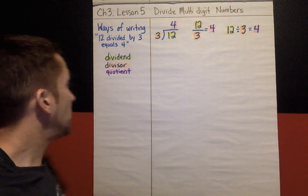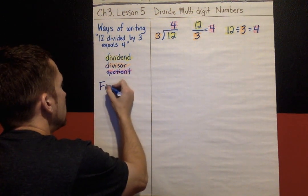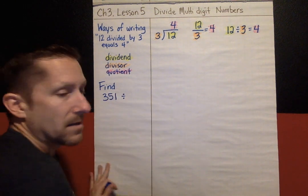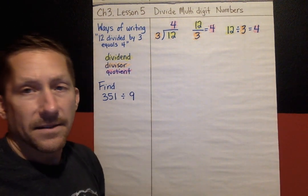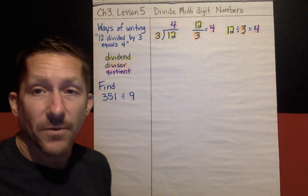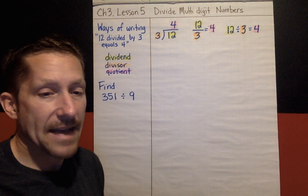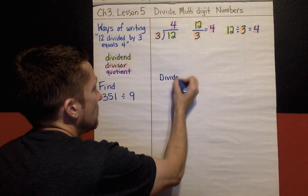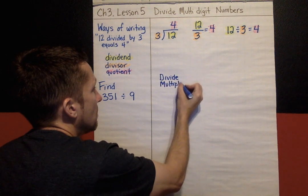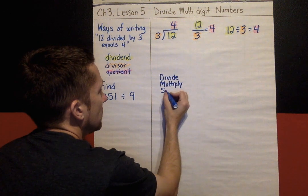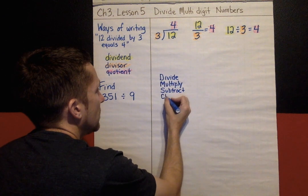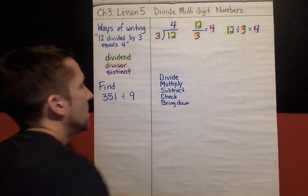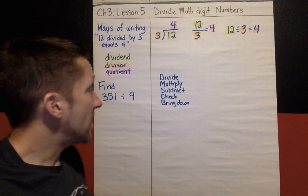Next thing we're going to do is show how to long divide. The problem we're going to look at first is find 351 divided by 9. And the steps that we're going to use for long division, we've talked about these before. It's been, if you go back to the skills test, it was in that. The steps are, I'm going to record the steps right here. The steps are divide, multiply, subtract, check, and bring down.